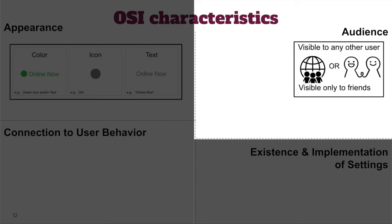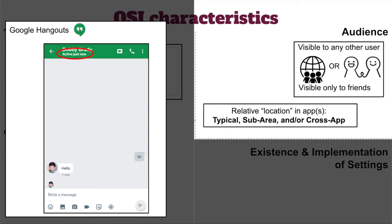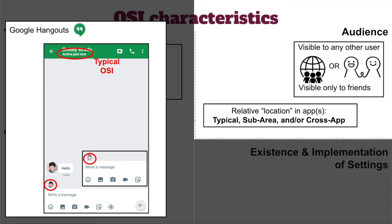Users' relative location in the app can also determine the audience of an OSI. To illustrate this, I'll use an example of Alice observing her conversation with Bob in Google Hangouts. When Bob is online, text at the top of their conversation view will say 'active just now.' In Hangouts, typical OSIs are visible only to people who have been added as connections. But there's also a small profile picture icon in the bottom left — when it's fully opaque Bob is viewing the conversation, and slightly transparent when he's not. We call this a sub-area OSI. Perhaps surprisingly, Alice can see this sub-area OSI even if she and Bob are not friends yet, which is different from the typical OSI's audience.